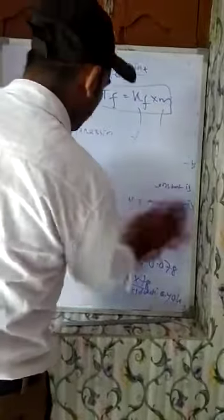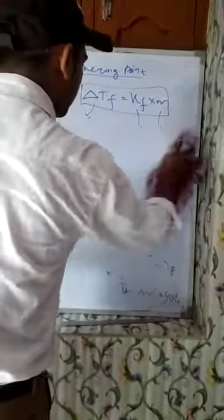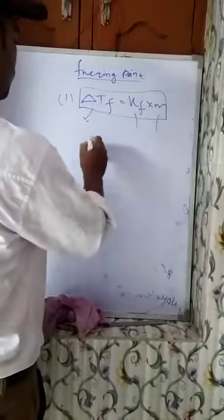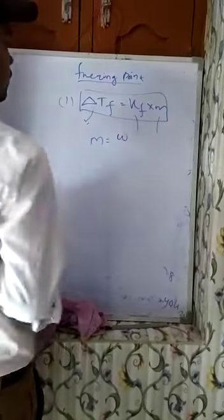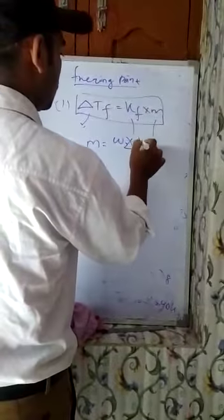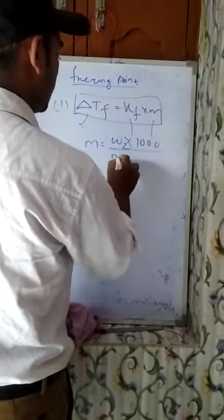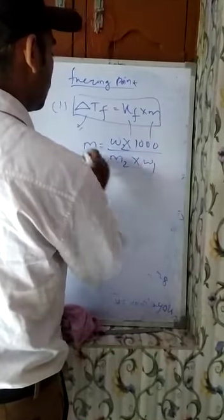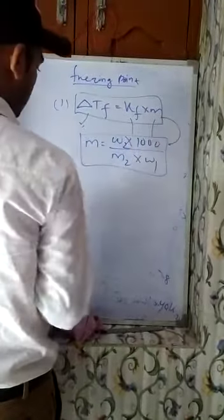But when molality is not given in the question, that means you should know the formula: molality = (W2 × 1000) / (M2 × W1). So if the question is not given molality, you put this formula to replace molality.